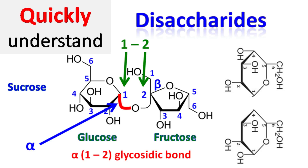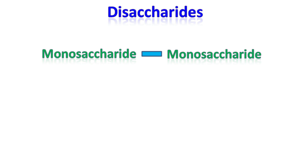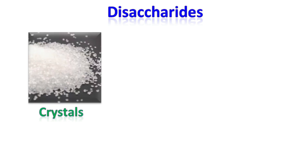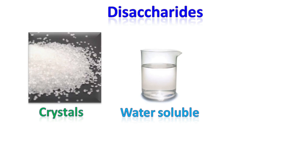Hey everyone, quick back chemistry basics here. Let's talk about disaccharides. The most common oligosaccharides found in nature are the disaccharides. Disaccharides consist of two monosaccharide units linked together by a glycosidic bond. Disaccharides are crystalline, water-soluble, and sweet in taste.